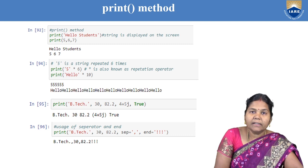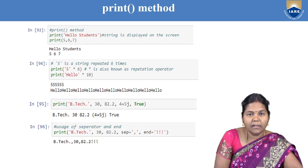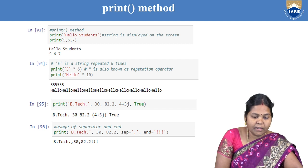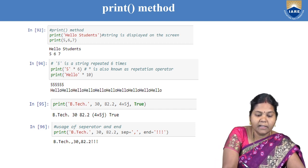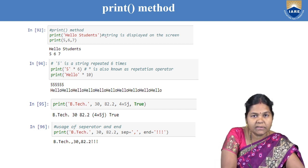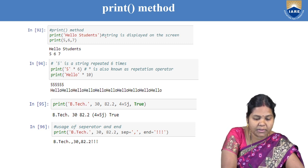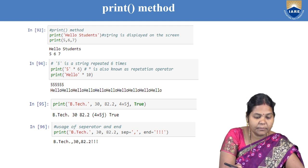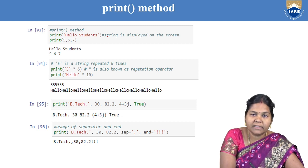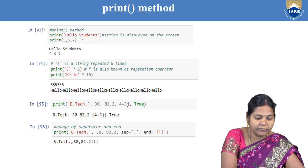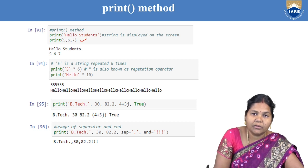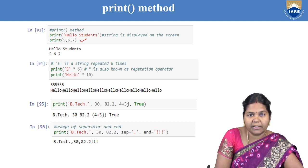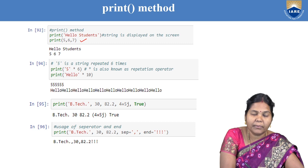Now let us see how to display output using the print method in Python. In the print method, if you want to display a string like 'hello students', you can write it using single or double quotes and it will be printed as is. Similarly, if you want to print a set of integer values like print(5, 6, 7), a list of values can be displayed using the print method.